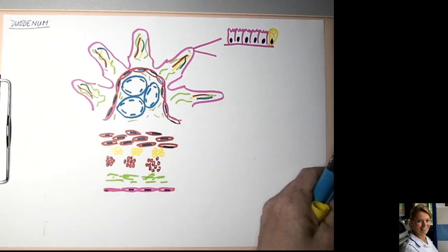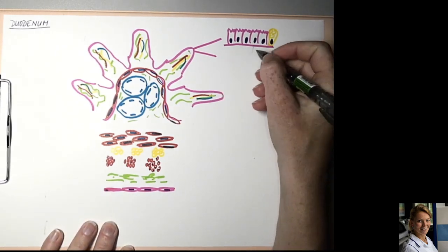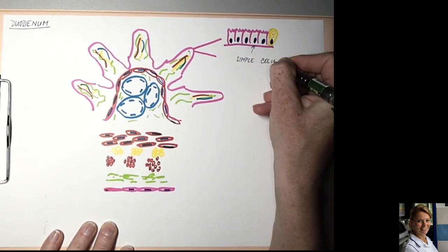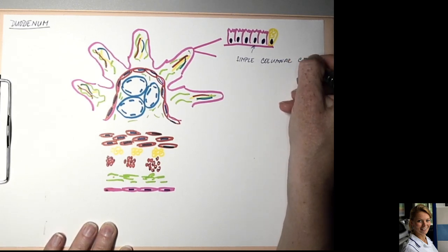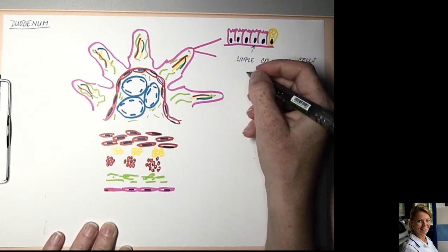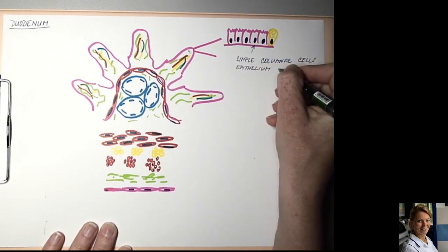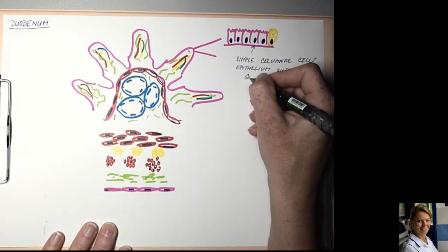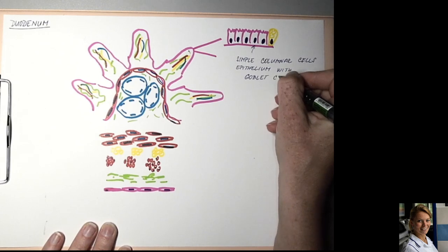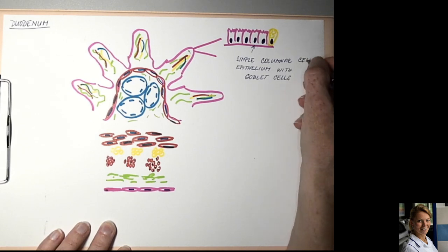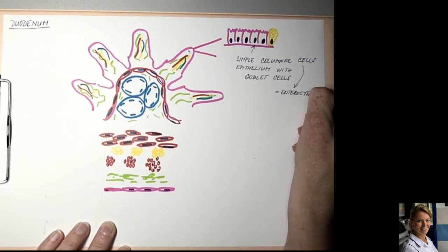Now let me describe the scheme. This is the simple columnar epithelium with goblet cells. The columnar cells are also called enterocytes.